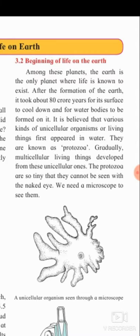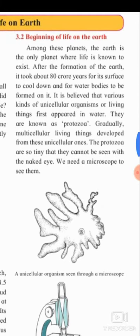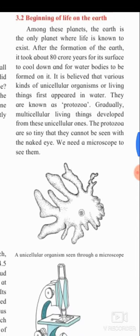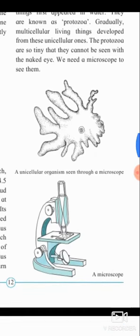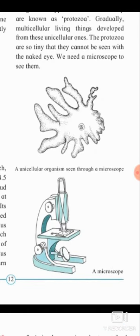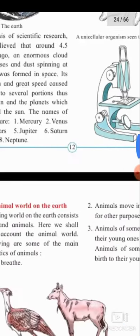It is believed that various kinds of unicellular organisms, or living things, first appeared in water. They are known as protozoa. Gradually, multicellular living things developed from these unicellular ones. The protozoa are so tiny that they cannot be seen with the naked eye. We need a microscope to see them. Here is an image of a unicellular organism seen through a microscope.